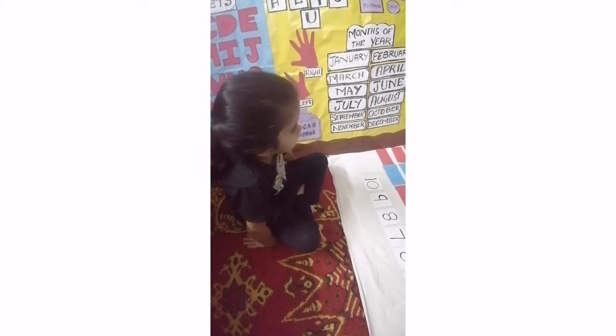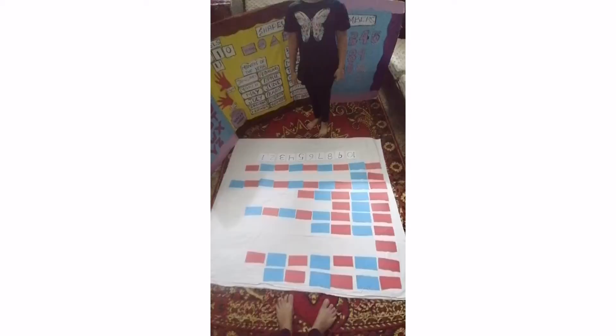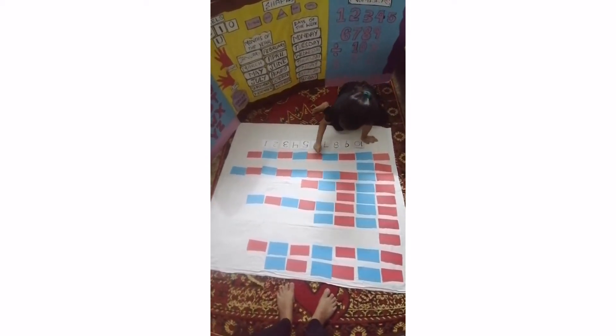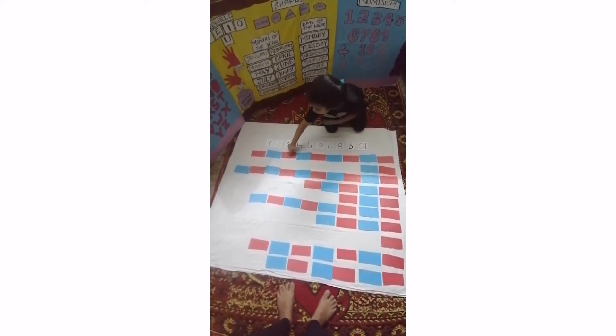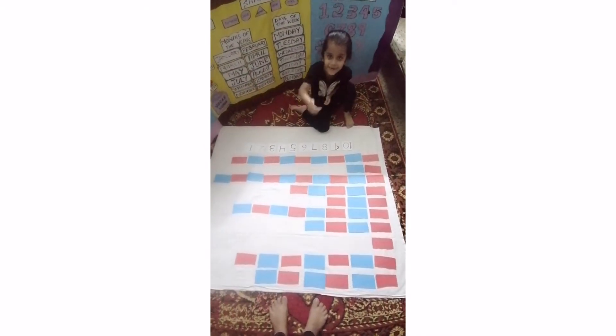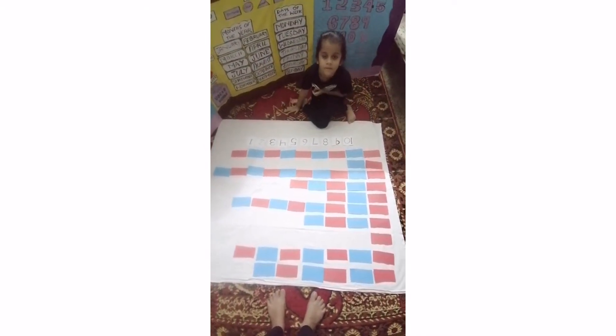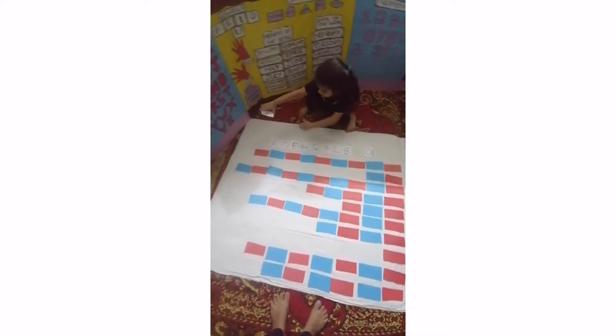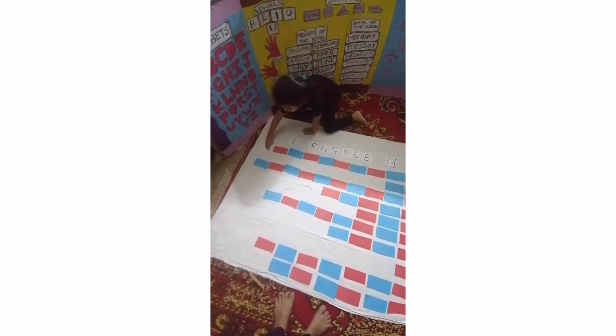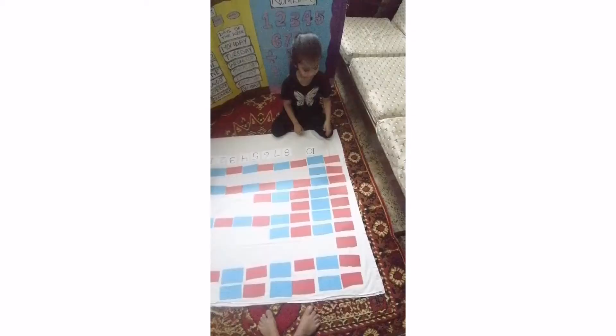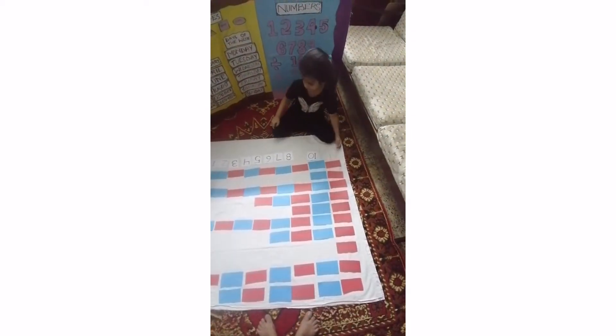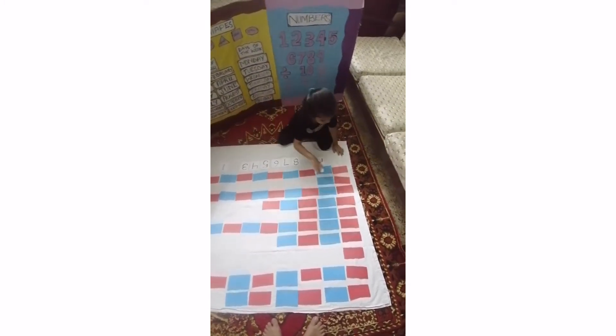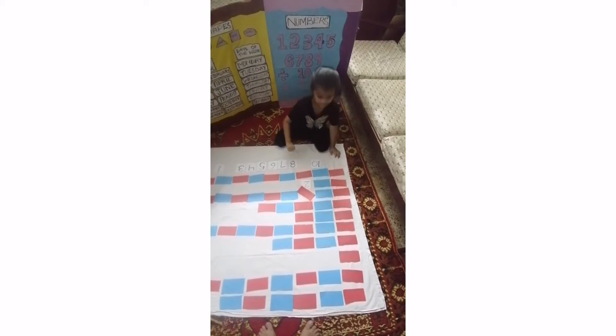Count the blocks and press the number. 1, 2, 3, 4, 5, 6, 7, 8, 9. It's 9. Where is number 9? This is it. Press 9 number. Very good. 1, 2. Where is number 2? Put the number. Very good.